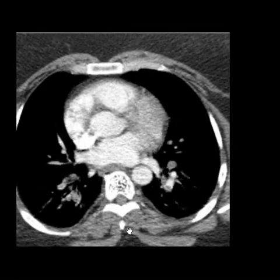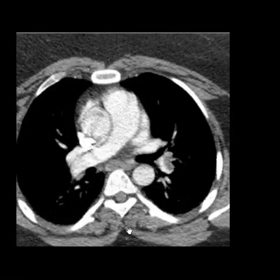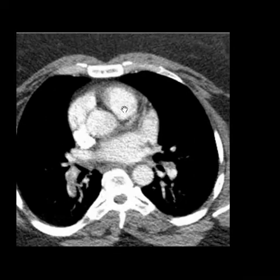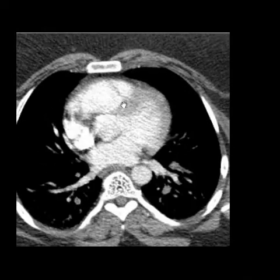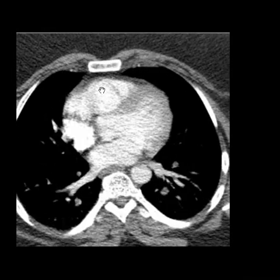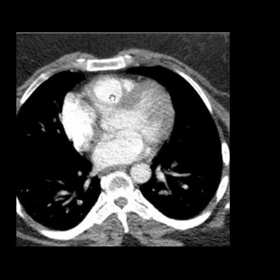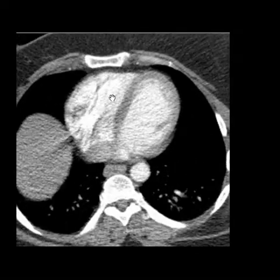Let's go up to the mediastinum here, the superior mediastinum. This is the main pulmonary artery, and if we follow it back down, we'll see that it comes out of the right ventricle. Right atrium, right ventricle. Left atrium, left ventricle. The right ventricle is pumping deoxygenated blood to the lungs so it will become oxygenated.